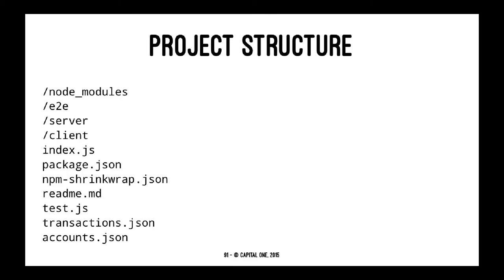So what that command actually generated: we have node_modules, which are for npm modules. We have an e2e folder which is for end-to-end tests. Yeoman would also execute npm install to download the required modules for you, so most of the time you don't need to do that manually. The server folder will have our Node, Mongoose, and Express files. The client folder will have AngularJS files, controllers and templates. And then package.json is our metadata for the project.